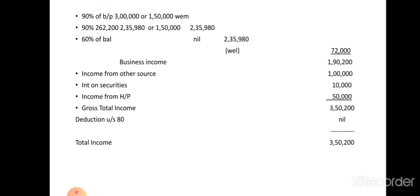From the gross total income, give deductions under Section 80 - for contributions or payments made by the firm from 80G to 80JJAA. In this problem, no such deductions are given, so deduction under Section 80 is nil. The total income - or taxable income - of the firm is three lakh fifty thousand two hundred.